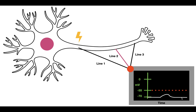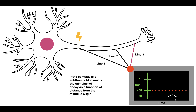At the final location, line three — the furthest from the stimulus origin — the signal looks even smaller than it did at line two. The conclusion is that a sub-threshold stimulus will decay and fail to fire an action potential, and it decays as a function of distance from the stimulus origin. As we go from line one to line three, the level of depolarization decreases.